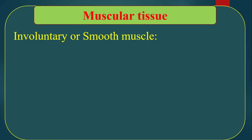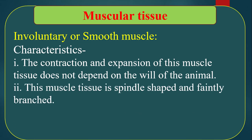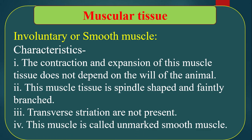Involuntary or smooth muscle. Characteristics — number one: the contraction and expansion of this muscle tissue does not depend on the will of the animal, that is why it is called involuntary muscle. Number two: this muscle tissue is spindle-shaped and faintly branched. Transverse striations are not present. This muscle is called unmarked or smooth muscle.